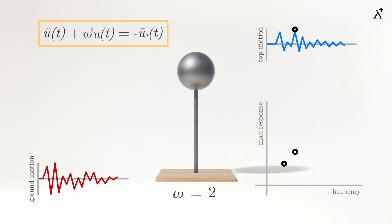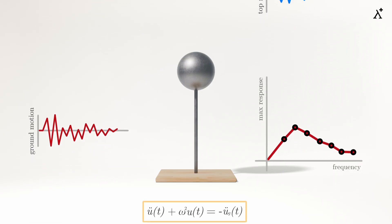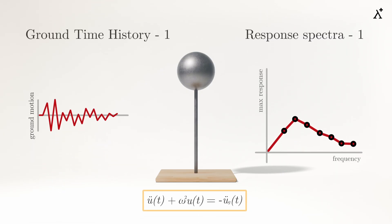By simply varying the natural frequency of the model, we could generate another response time history and store its maximum on the graph. In this manner, we could generate the response for all the desired frequencies. This plot is termed as the response spectrum corresponding to a particular time history. It contains the information of the maximum response of any system when subjected to this time history.